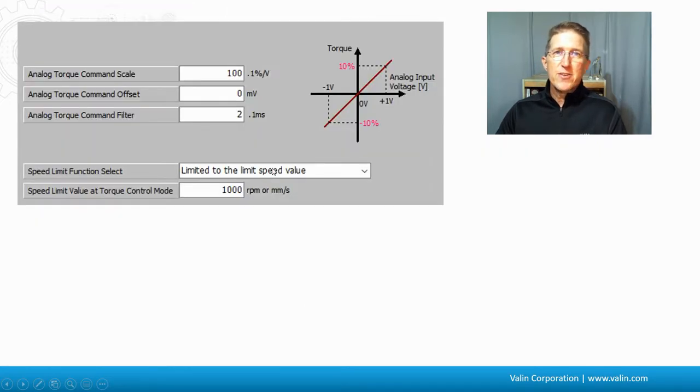Let's take another look at a different servo drive with a different software package. This is just looking at the analog torque command scale. Again, that's 0 to 10 volts. But notice here how the speed limit function is set to limit to the limit speed value, in this case of 1,000 RPM. That's the default.